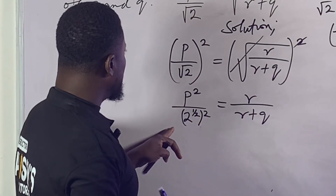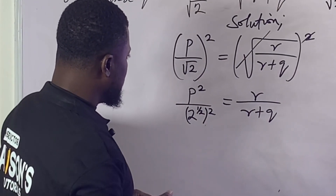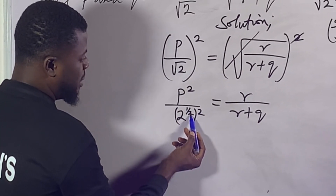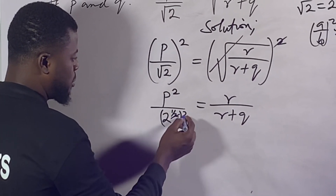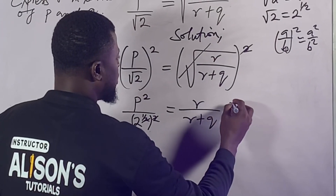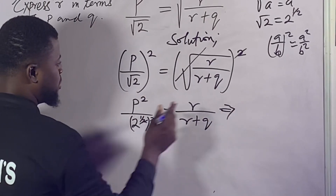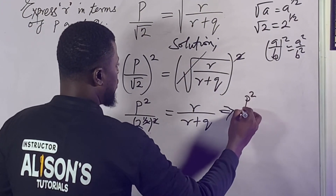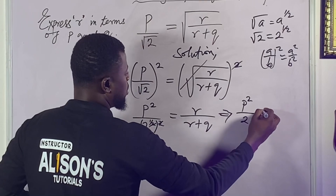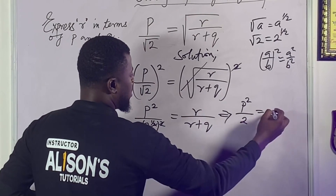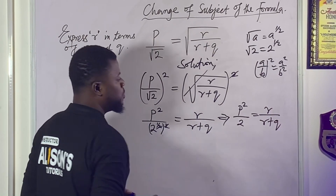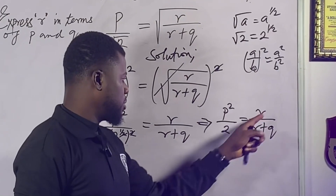At this point, keep in mind that one-half times 2 will be 1, so those twos cancel out. The whole expression becomes p squared over 2 on the denominator, equals arrow over arrow plus q.